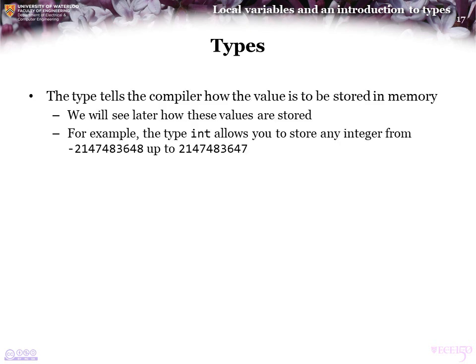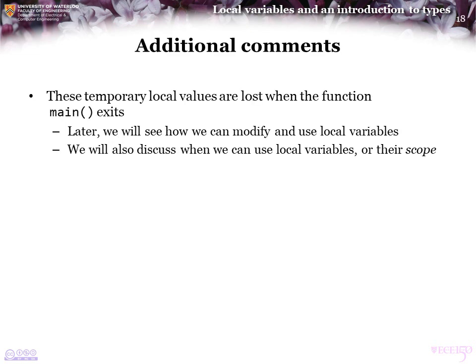The type tells the compiler how a particular value is to be stored in memory. We will see later how these are actually stored in memory, but as an example, type int allows you to store in memory any integer between two specific bounds, inclusive. These temporary local variables are lost when the function main exits. We will later see how we can use and modify these local variables and understand the scope of such variables.